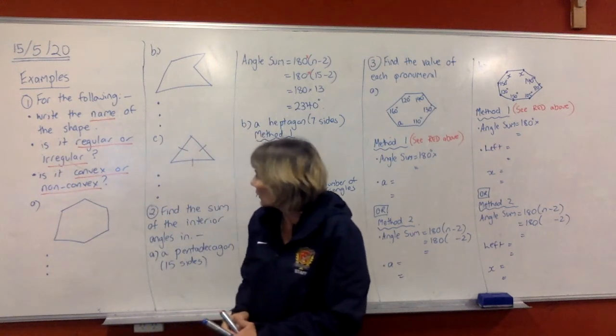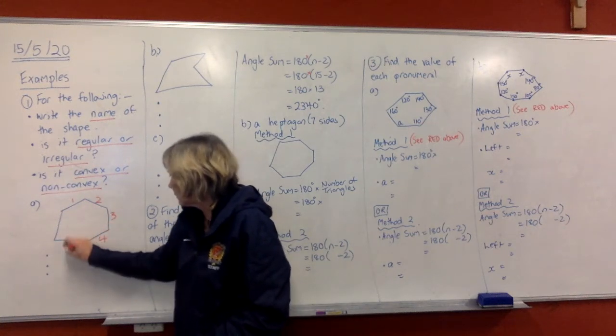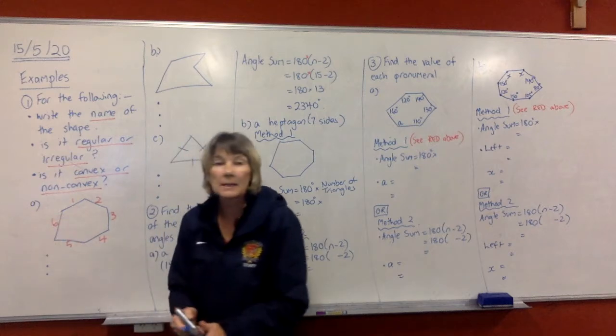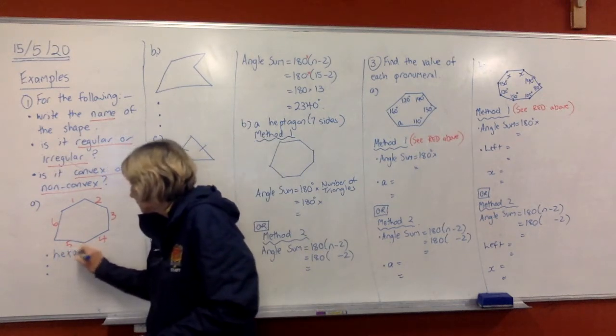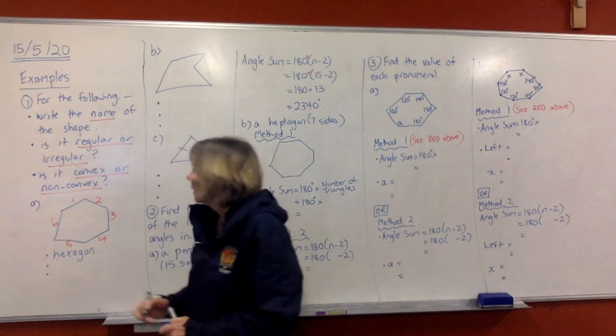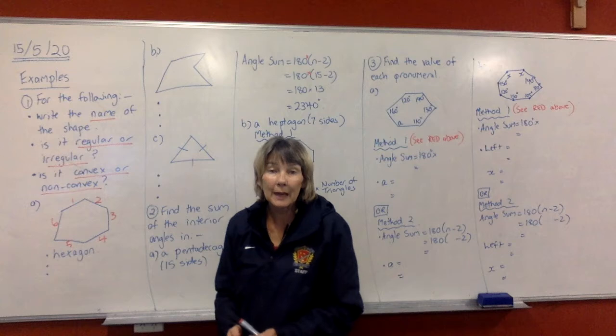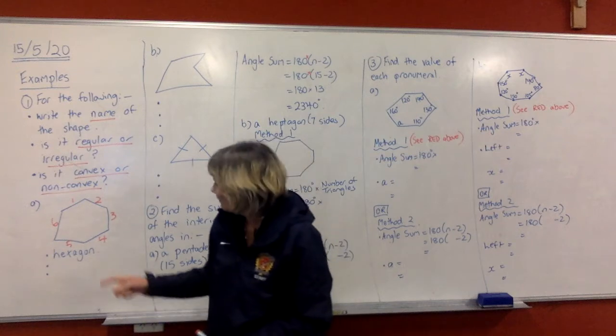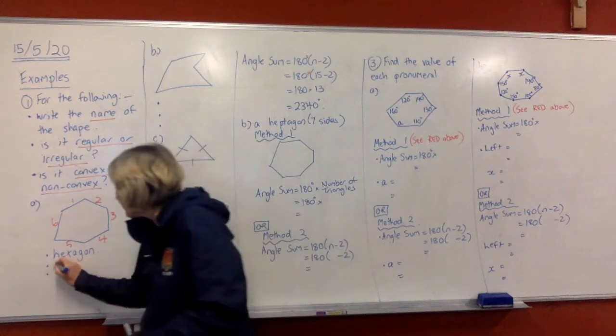So looking at this first one, we've got to count the sides: one, two, three, four, five, six. A six-sided shape is called a hexagon. Now, is it regular or irregular? Well, if it's regular, all the sides have to be equal. They don't look equal and they're not marked with the equal markings, so we're going to say it's irregular.